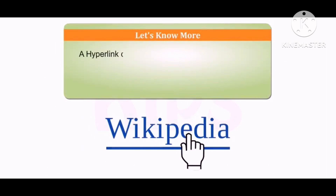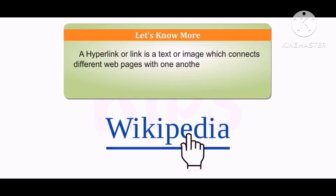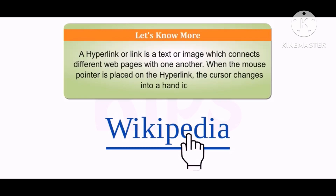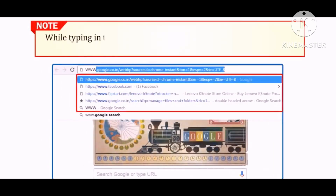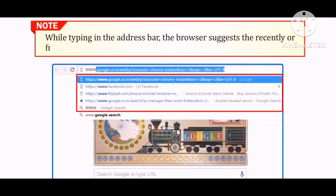Students, let us know more. A hyperlink or link is a text or image which connects different web pages with one another. When the mouse pointer is placed on the hyperlink, the cursor changes into a hand icon. Note that while typing in the address bar, the browser suggests the recently or frequently visited websites.